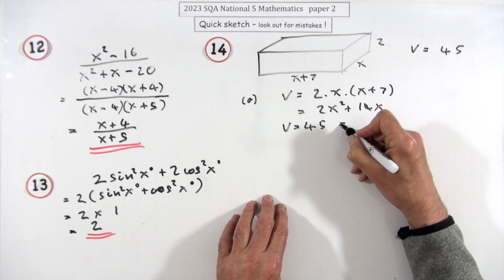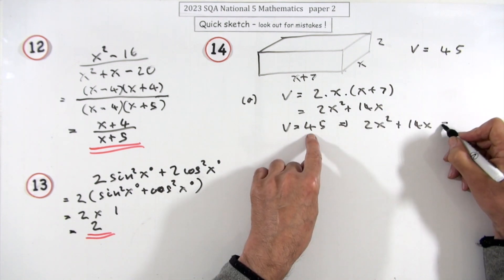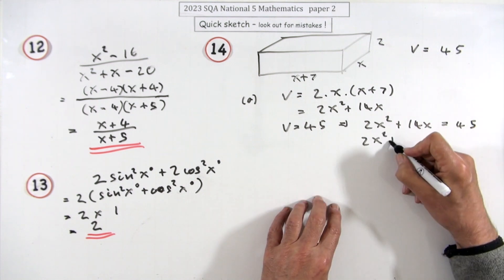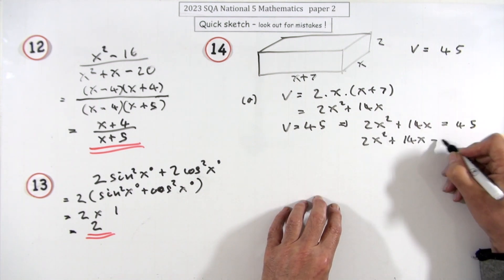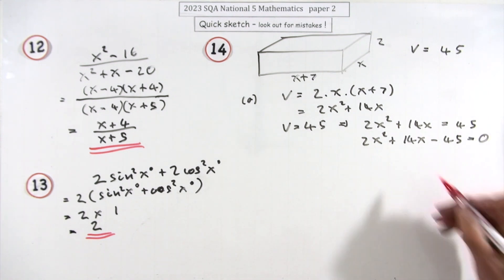So that will be 2x squared plus 14x. You also know that the volume is meant to be 45, so that means that 2x squared plus 14x as the volume should come to 45. Then you just throw it all over to one side: 2x squared plus 14x minus the 45 equals zero, which is what you wanted.